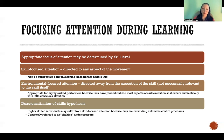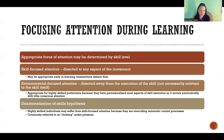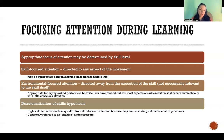Environmental-focused attention means we're focusing our attention away from the actual execution of the skill and looking more at environmental cues — not necessarily related to the skill itself, but cues about when to start the skill, how to move, or what action choice to make. We have an external focus on what's going on around us instead of internally on what we're actually doing. Environmental-focused attention is appropriate for more skilled performers because they have more experience and practice and have proceduralized most aspects of skill execution. If we just get out of our own way, we can let the nervous system take over and complete that skill more automatically while paying attention to other environmental cues.